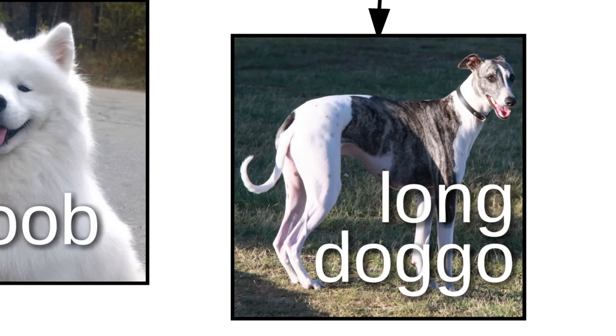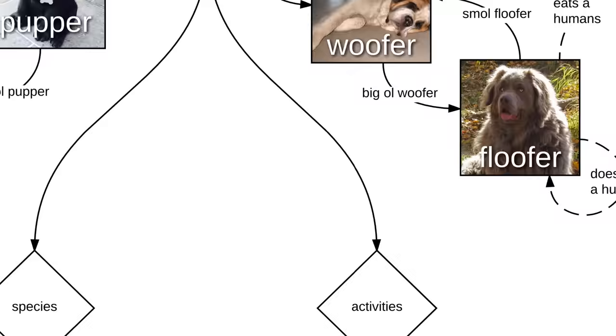Other doggos could be a wrinkler, or a corgo, or a shoob, or a long doggo, or a pugo, or a party pugo.